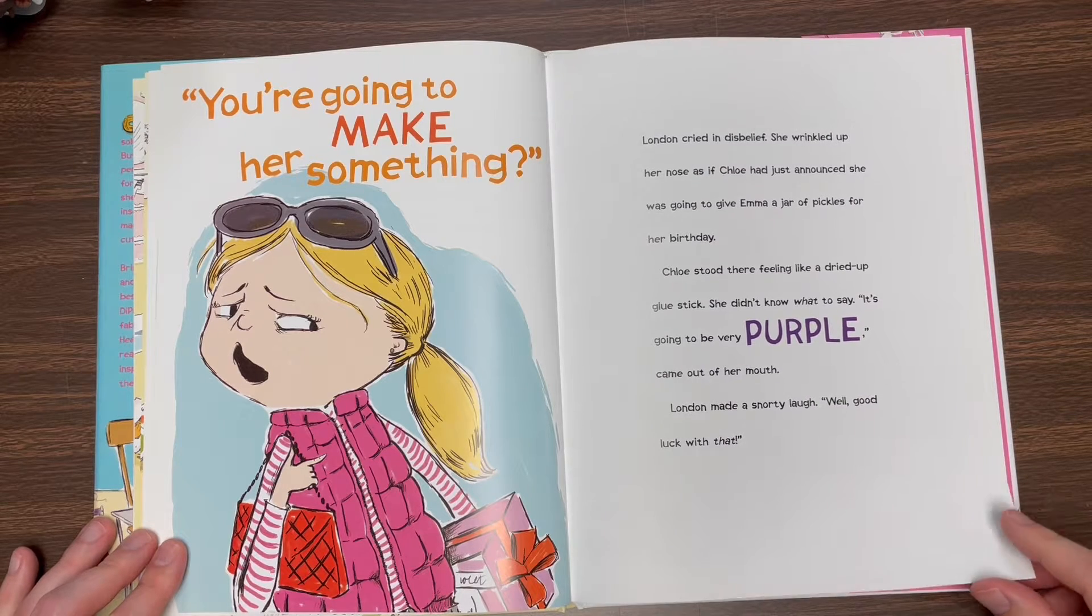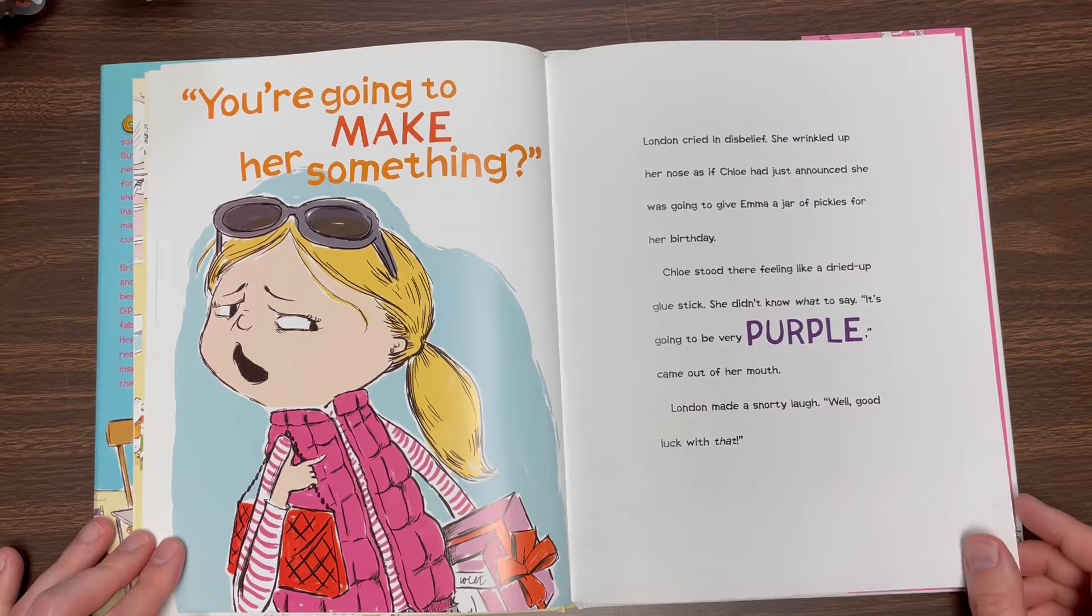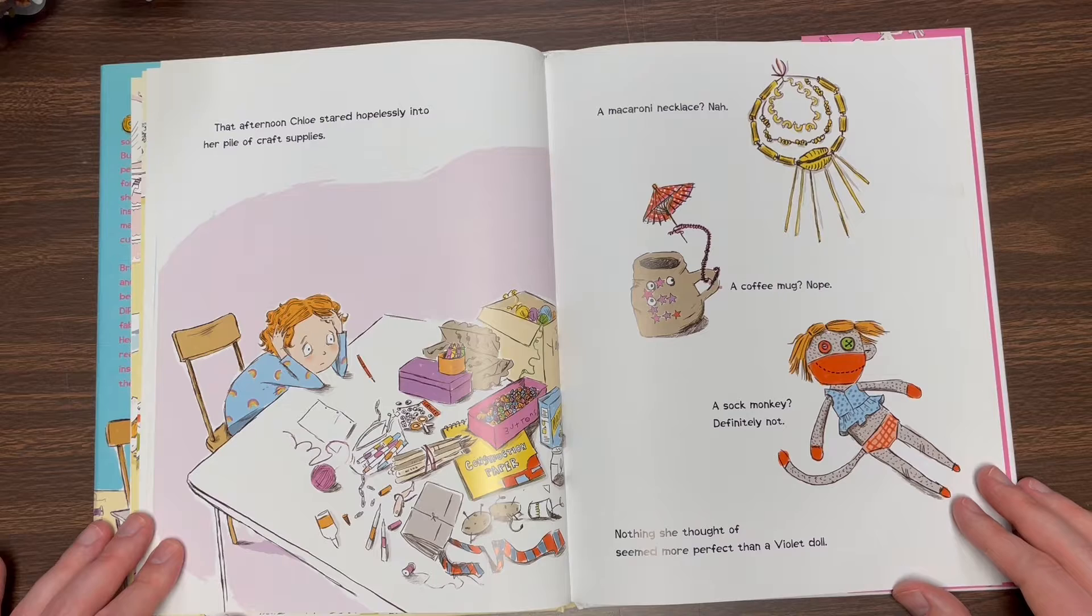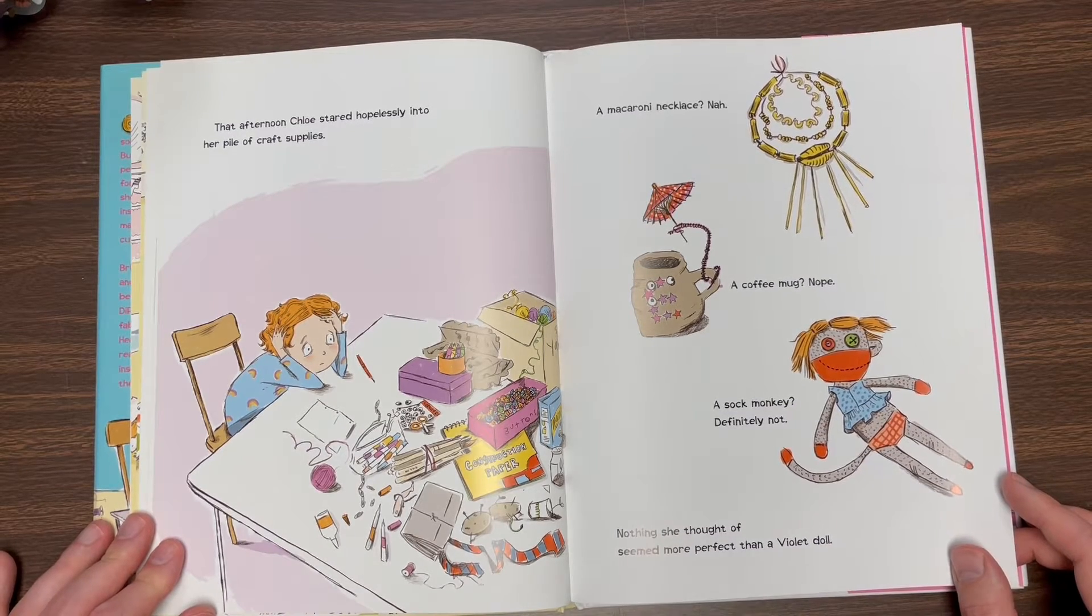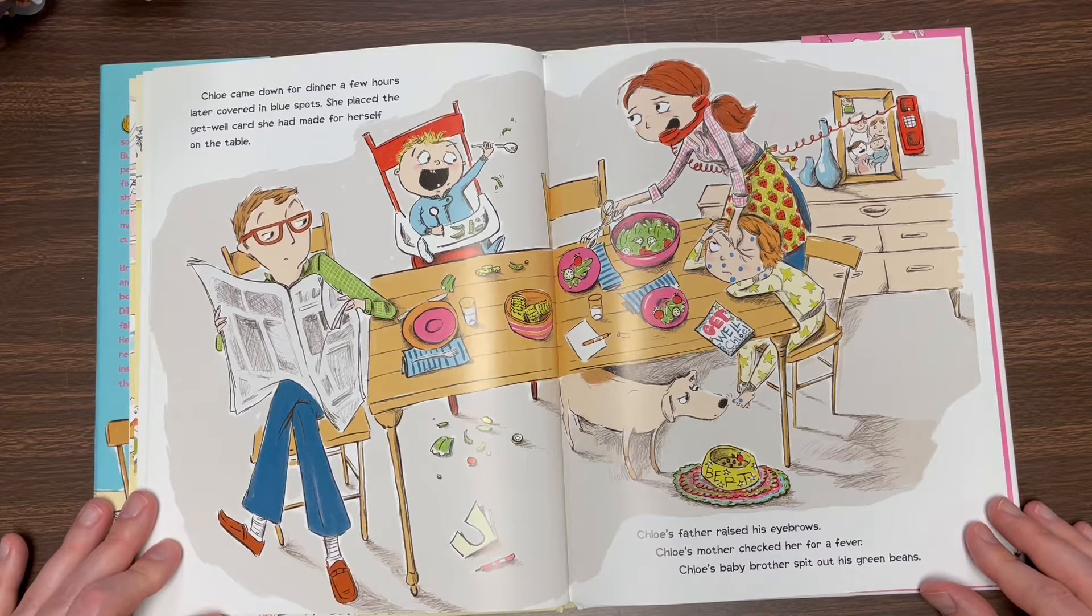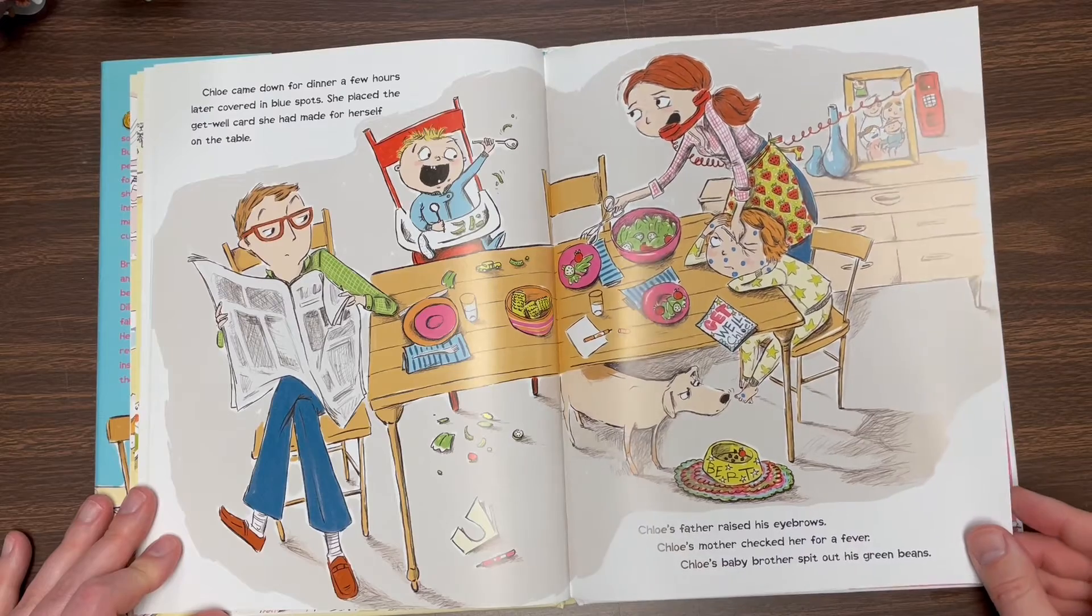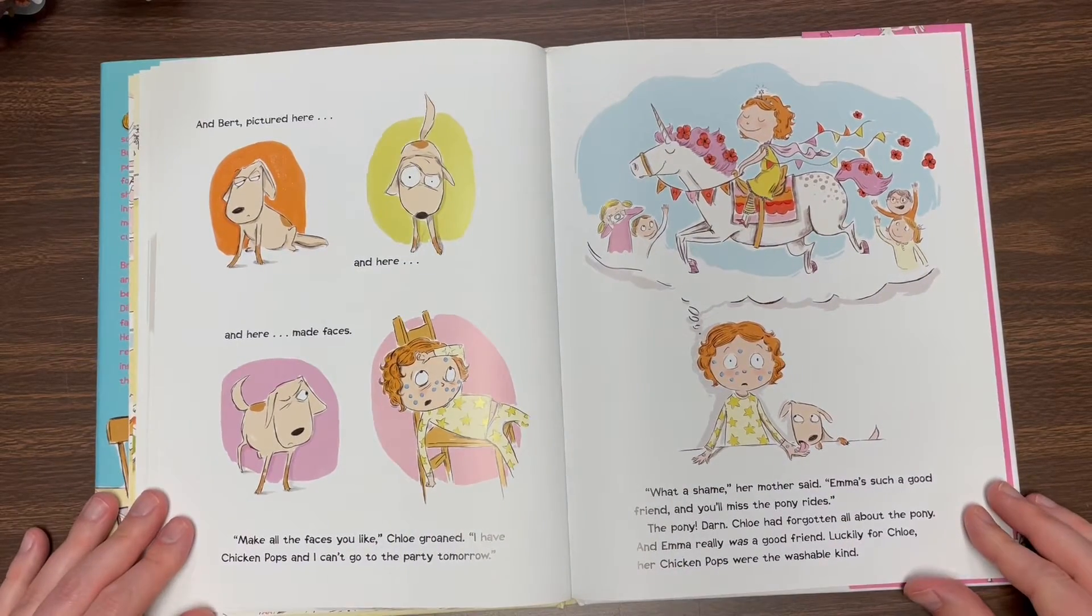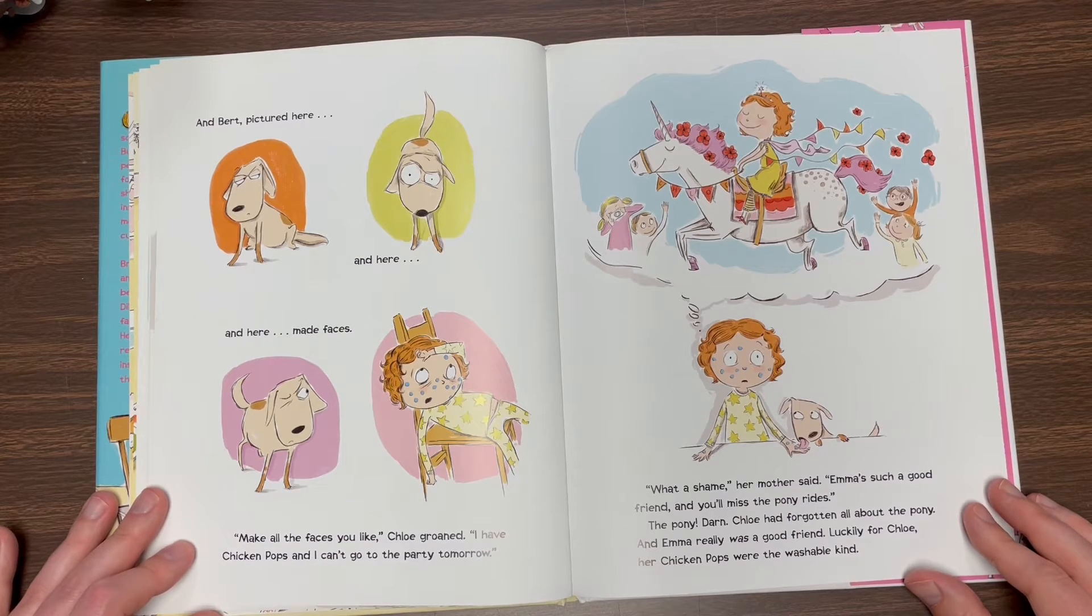Chloe stood there feeling like a dried up glue stick. She didn't know what to say. It's going to be very purple, came out of her mouth. London made a snorty laugh. Well, good luck with that. That afternoon, Chloe started hopelessly into her pile of craft supplies. A macaroni necklace? Nah. A coffee mug? Nope. A sock monkey? Definitely not. Nothing she thought of seemed more perfect than a Violet doll. Chloe came down for dinner a few hours later, covered in blue spots. She placed the get well card she had made for herself on the table. Chloe's father raised his eyebrows. Chloe's mother checked her for a fever. Chloe's baby brother spit out his green beans. And Bert, pictured here and here and here, made faces. Make all the faces you like, Chloe groaned. I have chicken pops and I can't go to the party tomorrow.